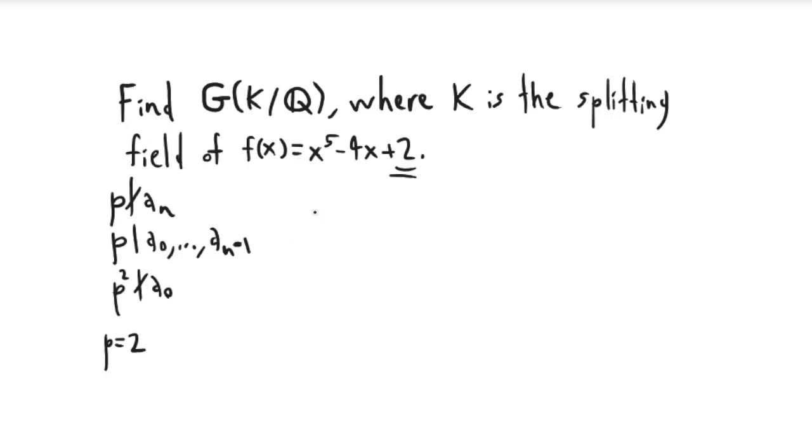A fact about irreducible polynomials is that their Galois group, so I'll denote the Galois group of this polynomial by G, is transitive. The Galois group acts on the roots of the polynomial by permuting them with each other. And as long as the polynomial is irreducible, there's only one orbit. So for every root of the polynomial, and then for every other root of the polynomial, there is an element of the Galois group that maps the first root to the second root. So there's only one orbit.